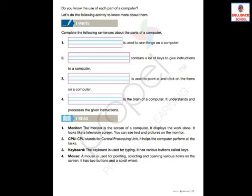Keyboard: the keyboard is used for typing. It has various buttons called keys. We use the keyboard for typing. It has lots of buttons inside it — as you have seen in the computer lab — and we call them keys. A standard keyboard has 104 keys.